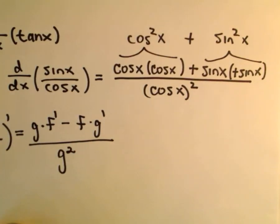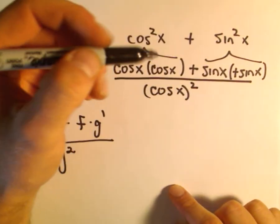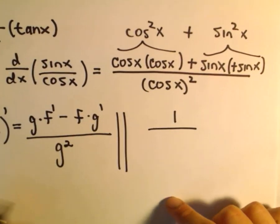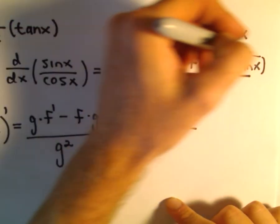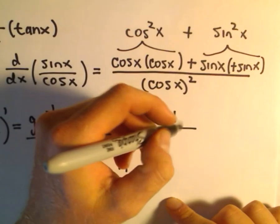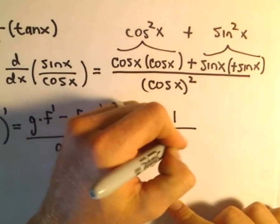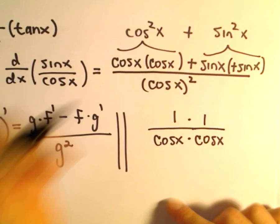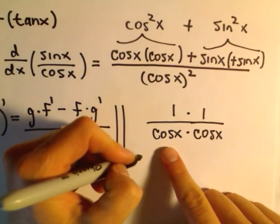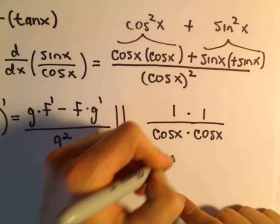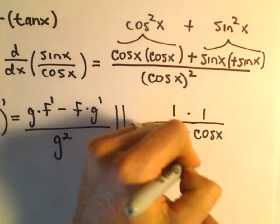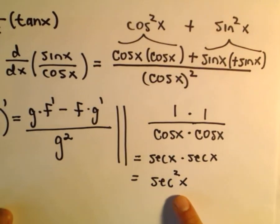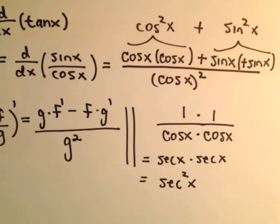Remember the identity: cosine squared plus sine squared simply equals one. So cosine squared plus sine squared in the numerator equals one over cosine x squared. We can think about that as one over cosine times one over cosine. One over cosine x gives us secant x, and we've got another one over cosine x giving us another secant x. So we get secant squared x. The derivative of tangent is just secant squared, and that's where it comes from.